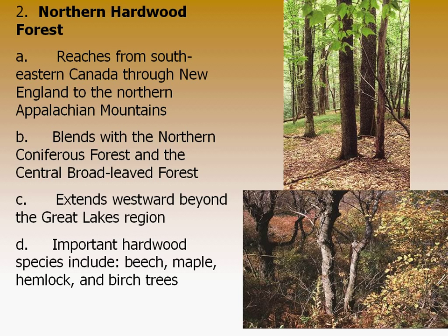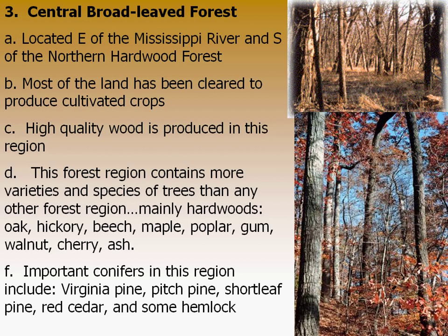Here in the Appalachians, when you get into the hardwood forests considering the Southeast, those would be considered your central broadleaf forests. While you do have some pines in there, your oaks, hickories, maples, and poplars are the dominant species. As noted on the slide, you do see some Virginia pines, some pitch pine, and some hemlock at the higher elevations, but the majority of this region is dominated by deciduous broadleaf trees. This is where your high quality hardwood lumber comes from.